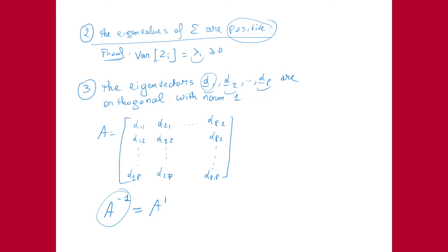We will use these results to show how to switch from the traditional basis vectors to the new basis vectors alpha1, alpha2, all the way to alphaP. Note that if we start from a symmetric covariance matrix you can prove the eigenvectors are orthogonal with norm 1. However, in PCA we did it the other way: we were looking for vectors that are orthogonal with norm 1, and found that they must be the eigenvectors.